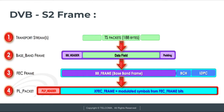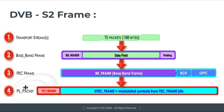Here is the frame structure of DVB-S2. At the transport stream level it consists of 188 bytes. At the baseband frame, the BB header is added along with padding to the data field. Then the FEC frame — error correction techniques — are added, making the BB frame complete with BCH coding and LDPC coding. Finally, at the PL packet layer, the PL header is added with modulated symbols from the FEC frame bits.